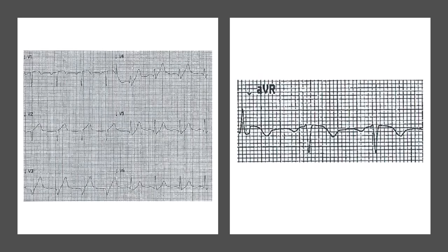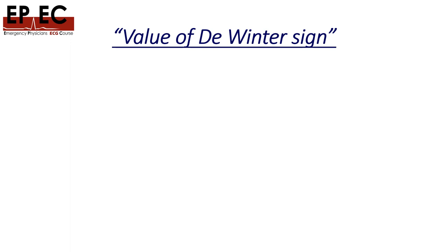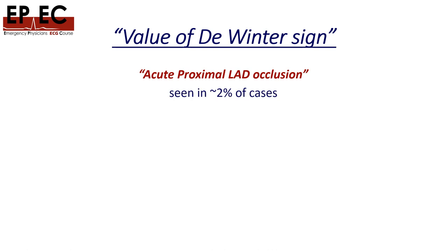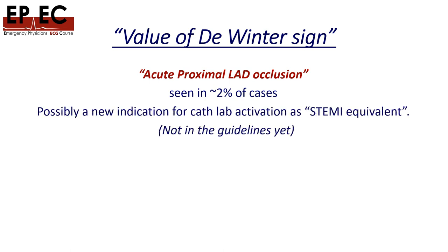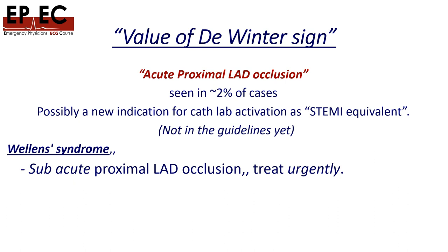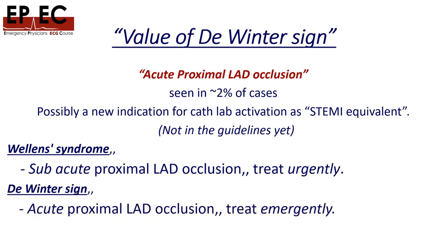In our patient, we can see the ST elevation in AVR and the poor R wave progression. The De Winter sign is a sign of acute proximal LAD occlusion — it is that serious. It's been seen in about 2% of cases with LAD occlusion. It is possibly a new indication for cath lab activation as a STEMI equivalent, though to my knowledge it is not yet in any guidelines. If comparing to Wellens syndrome: Wellens is a subacute proximal LAD occlusion treated urgently, while De Winter is acute and should be treated emergently.